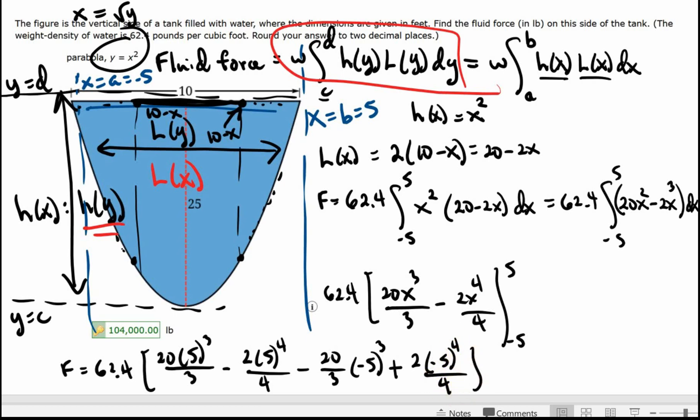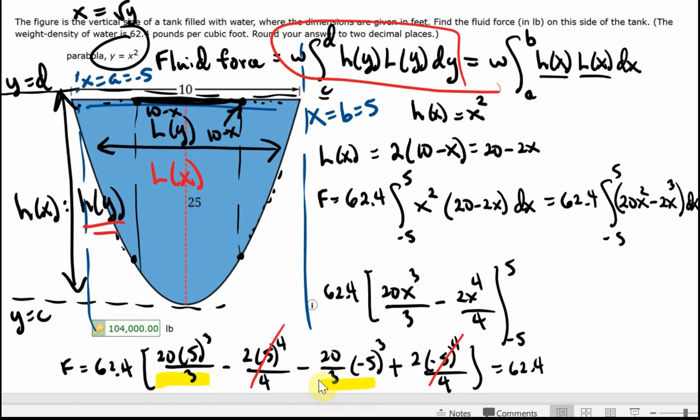Let's close that up. Now these guys cancel. That negative 5 to the fourth is just positive, so these are opposites here, so they cancel. So I have 62.4. Now these two terms, this term here and that term there are the same. Negative and negative is positive, so I'm just going to say times 2. So in the end, this is 20 times 2 divided by 3 times 5 to the third.